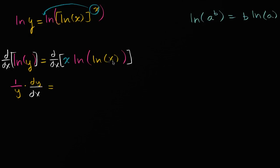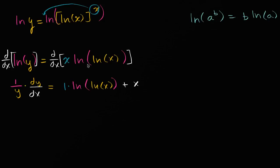On the right-hand side, the first thing we want to do is apply the product rule. It's the derivative of the first expression — just one — times the second function, which is the natural log of the natural log of x. Then plus the first function, just x, times the derivative of the second function, which is the derivative of the natural log of the natural log of x.